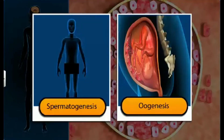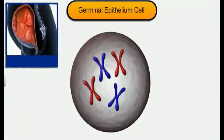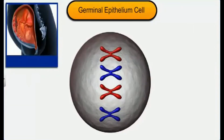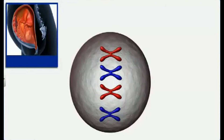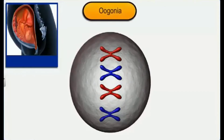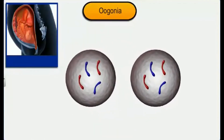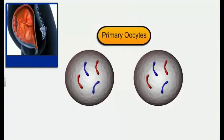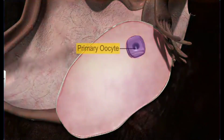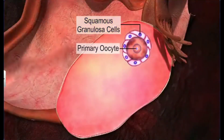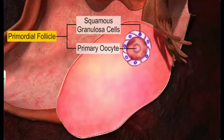FSH, on the other hand, acts on the Sertoli cells to stimulate the secretion of substances that nurture the sperm cells during spermatogenesis. While spermatogenesis occurs at puberty, oogenesis is triggered before a woman's birth, when the germinal epithelial cells in the ovary of the fetus divide mitotically to form gamete mother cells called oogonia. A few oogonia divide again to form primary oocytes, which then get enveloped by a layer of squamous granulosa cells, forming the primordial follicle.